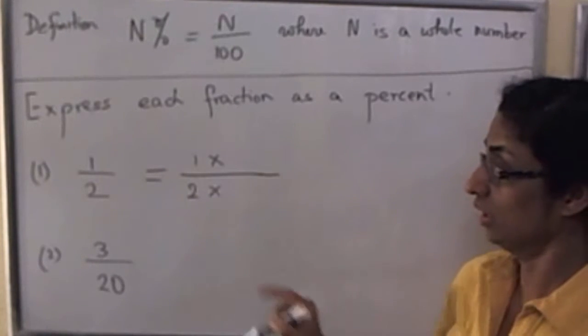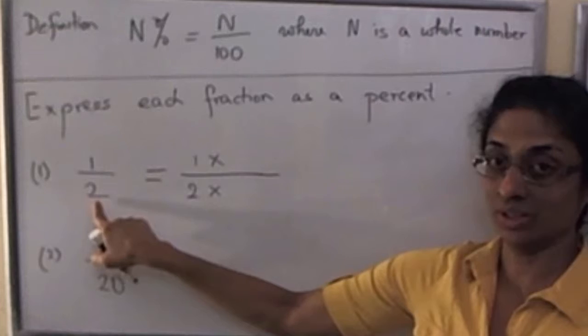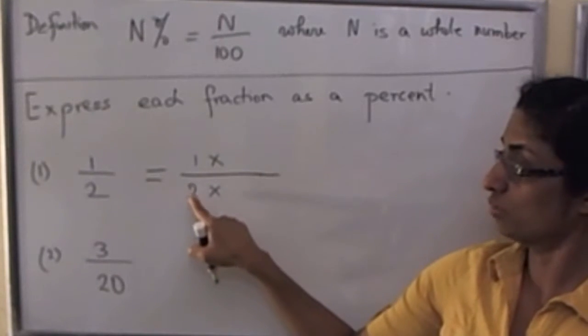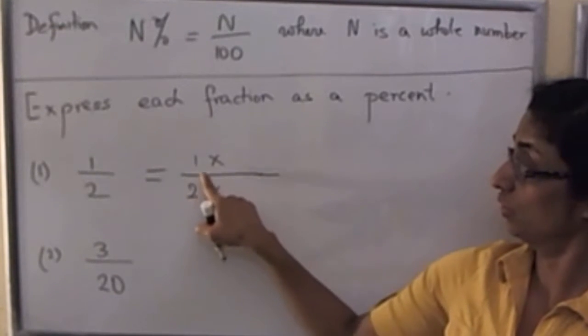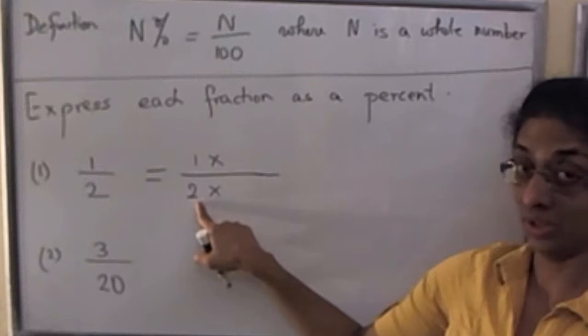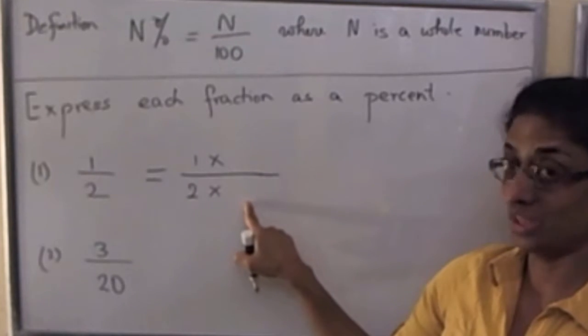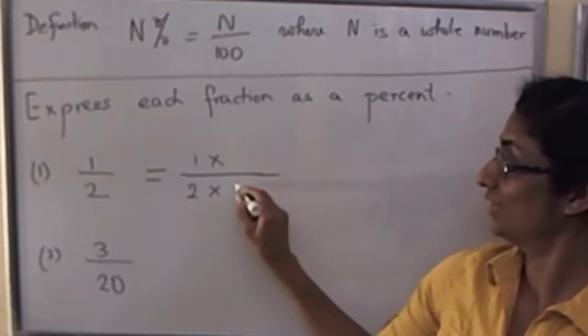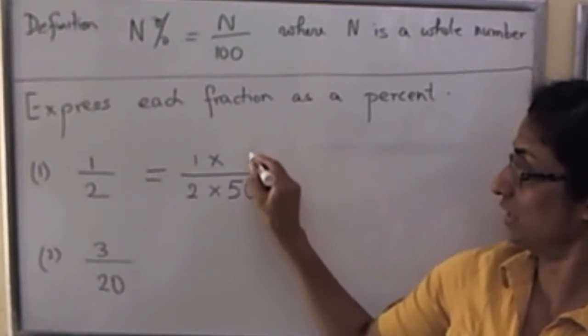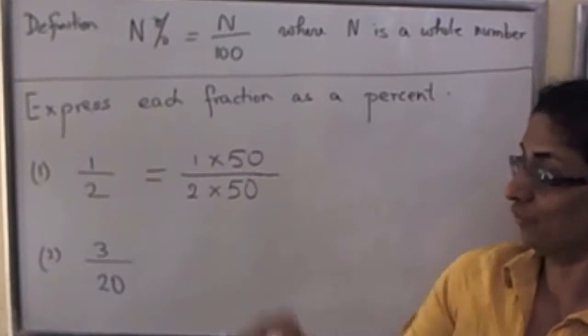So in this situation, we would like to have 100 in the denominator. So what might we multiply both numerator and denominator by so that in the denominator we have exactly 100? I think you will say it's 50.